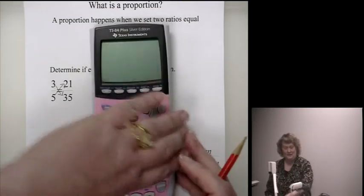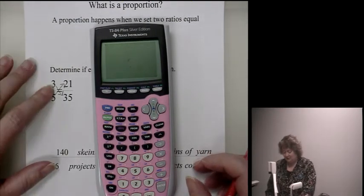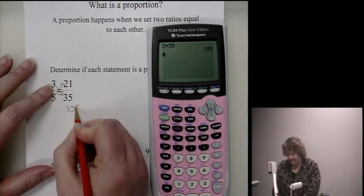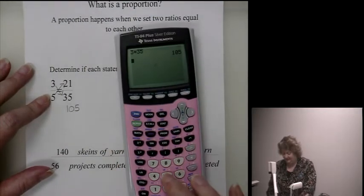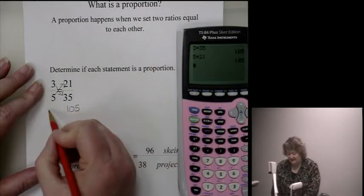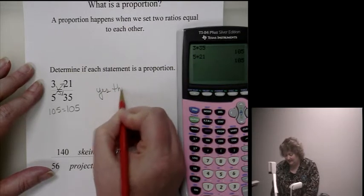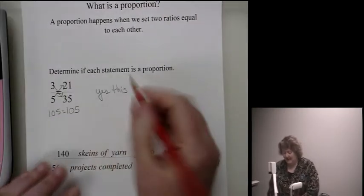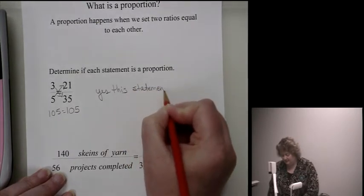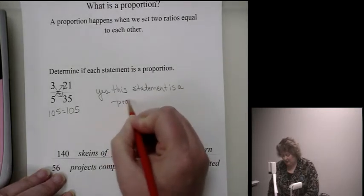Now I'm not going to try to multiply that in my head. I don't expect you to multiply that in your head. So you're going to take 3 times 35 and you get 105, and 5 times 21, and lo and behold, we get 105. Since the cross products are the same, then yes, this statement is a proportion.